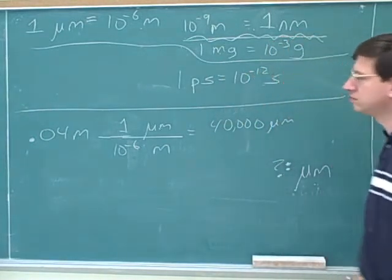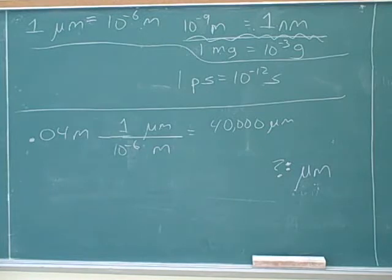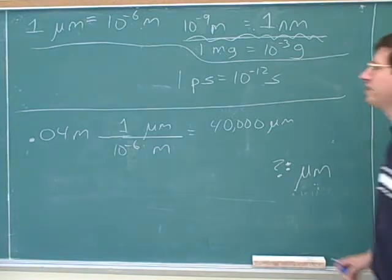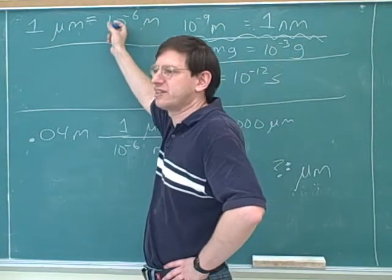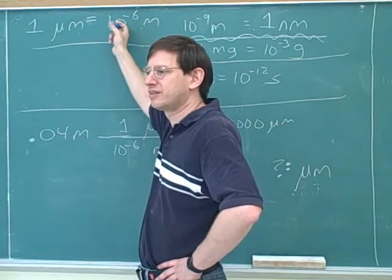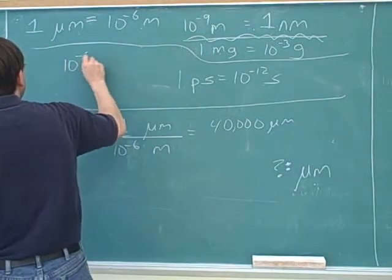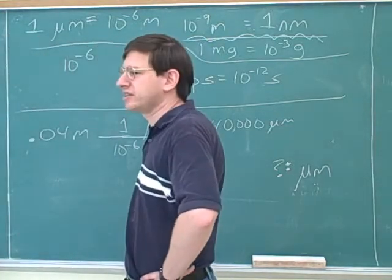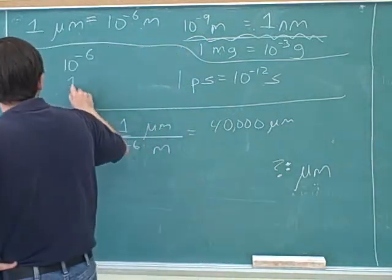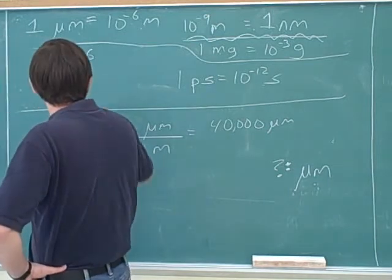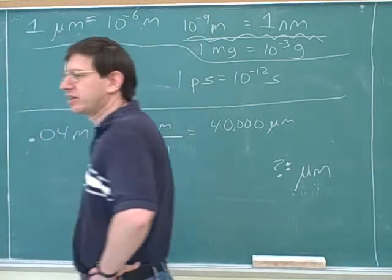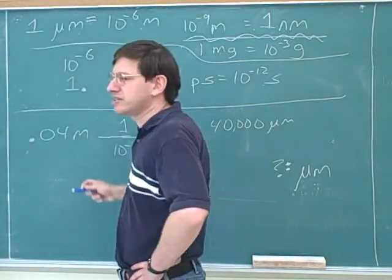When it says 10 to the negative six, do you go to the left or the right? 10 to the negative six means moving the decimal place to the left. That's right. So if I was going to write 10 to the negative six, I would write it like this. I would start with the number one with the decimal place over here. And now I would move it six places to the left.